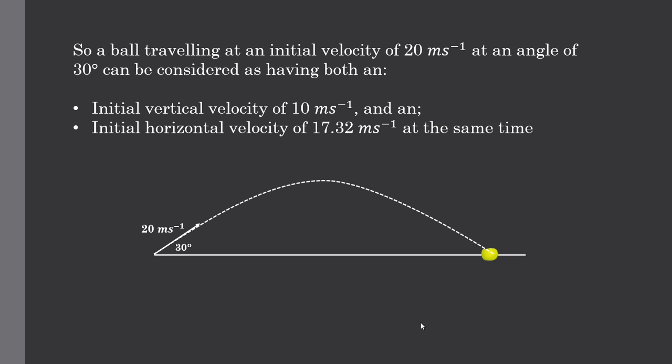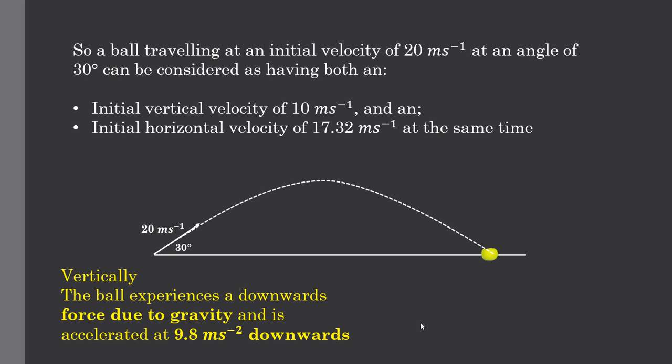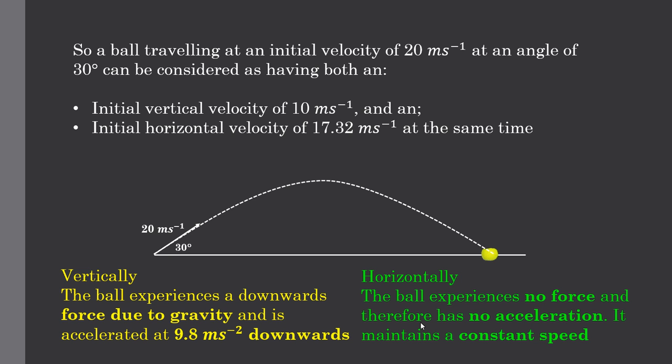The advantage of this is we can analyse the initial vertical and the initial horizontal independent of one another. Vertically, the ball experiences a downward force due to gravity and is accelerated at 9.8m per second squared. Whereas horizontally, there is no net force on the ball and so it experiences no acceleration — it maintains a constant speed.